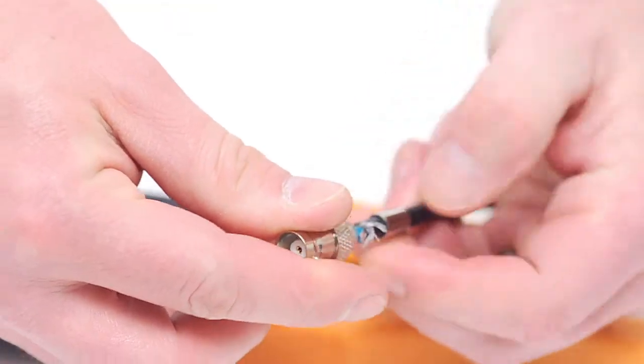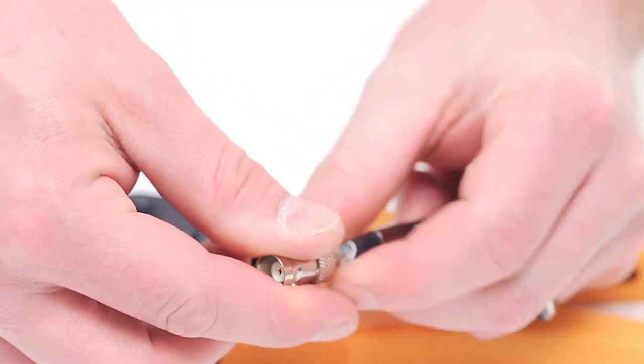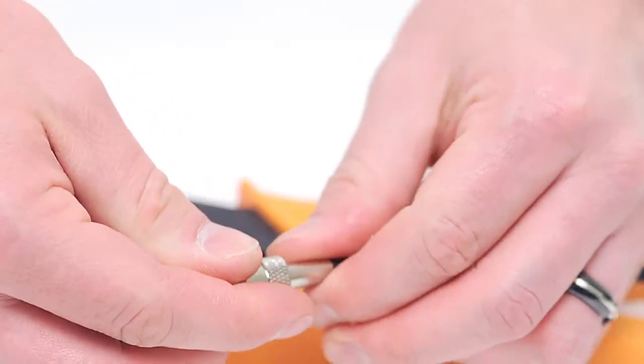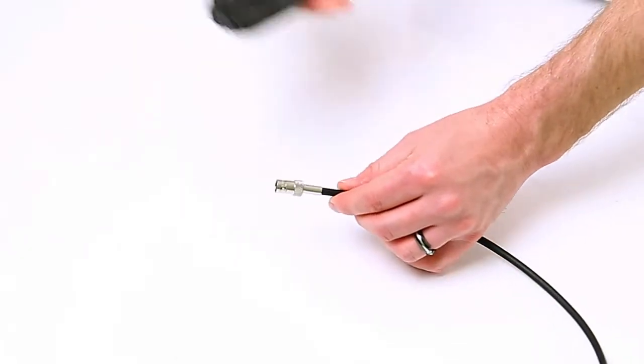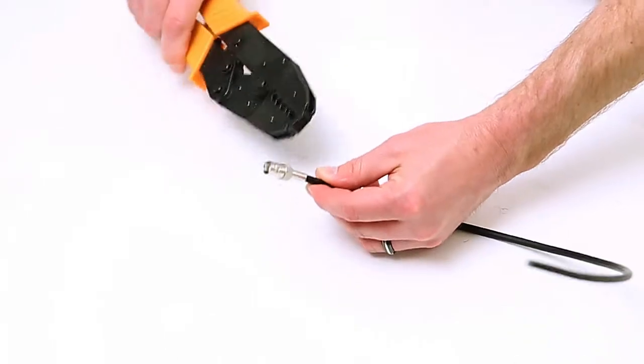Slide the ferrule back over the jacket, making sure it folds the braid onto the connector. Take your crimp tool and crimp the ferrule onto the jacket. This will create a secure connection.